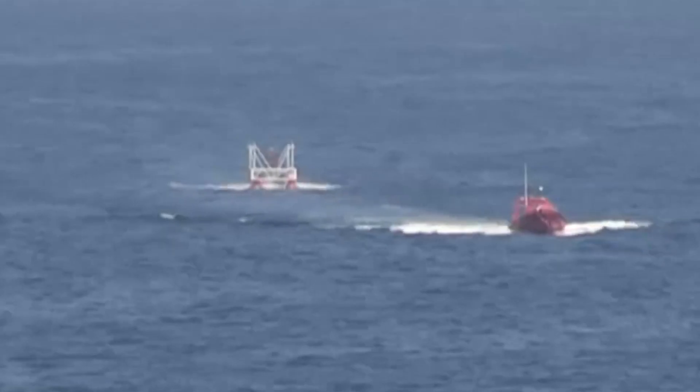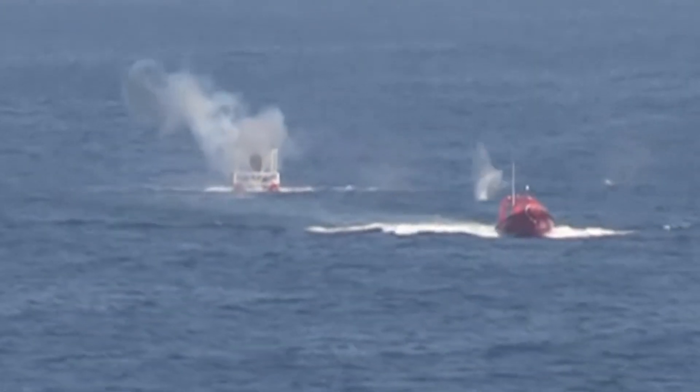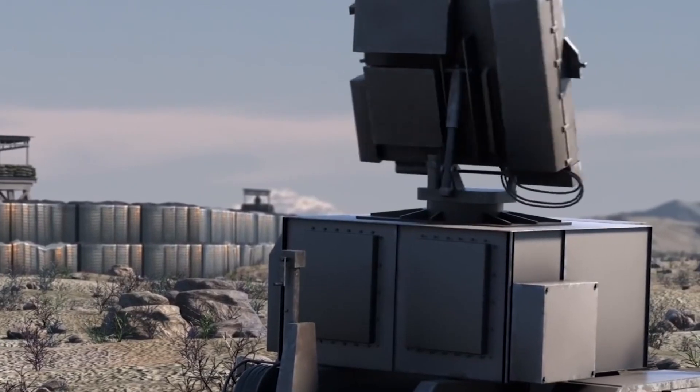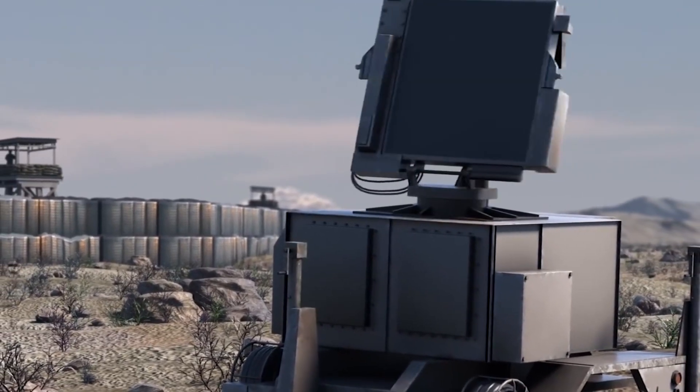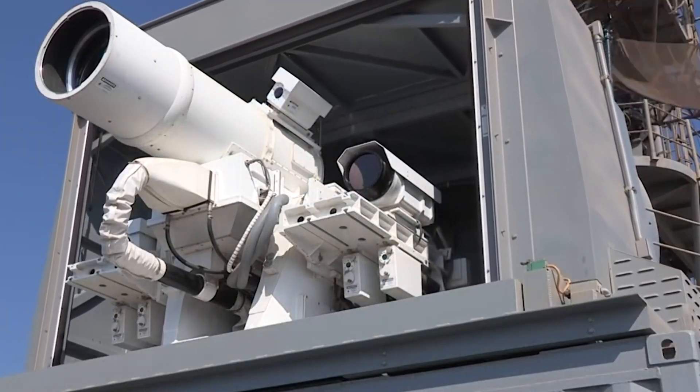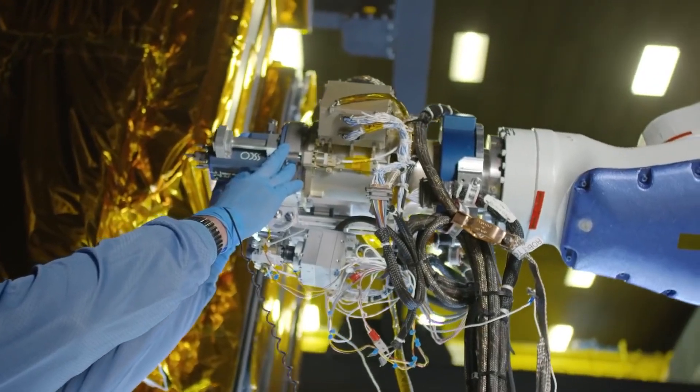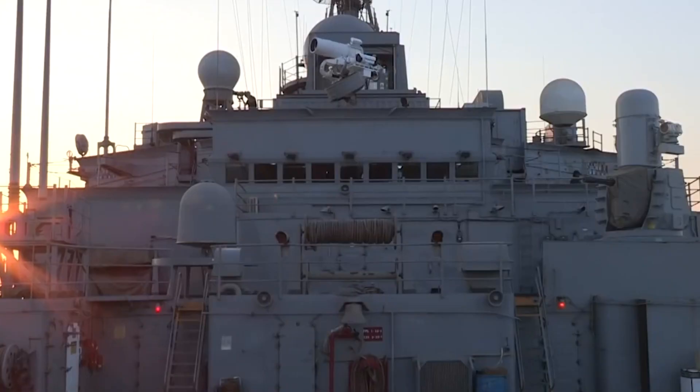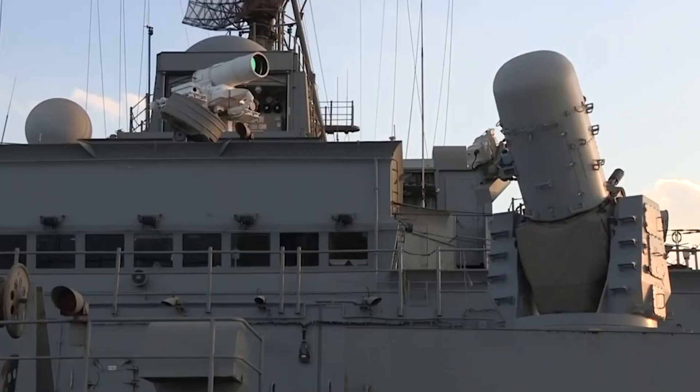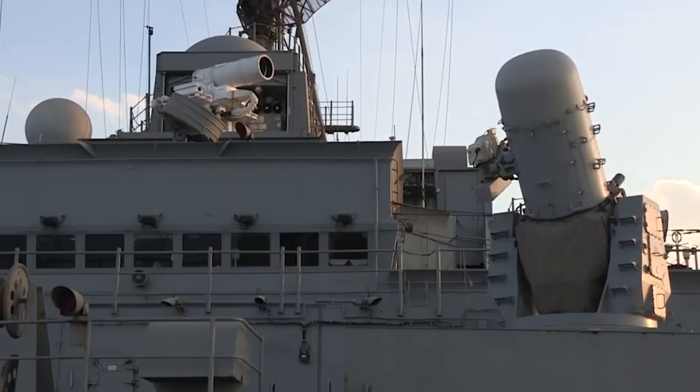Ever wondered how high-energy lasers work? Electrical power generates a laser beam, and a system points the laser beam onto the target precisely for long enough to damage it. Radar detects and points the laser in the direction of the threat. A camera then captures and provides a higher-resolution picture than the radar could provide. The decision-maker then determines whether the object is a threat and the time to engage it.